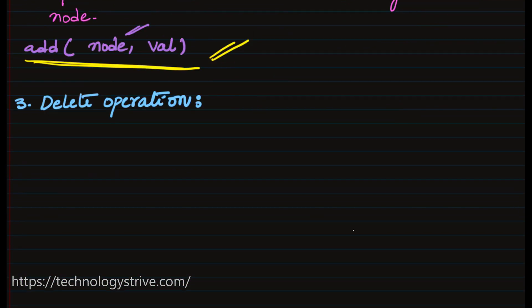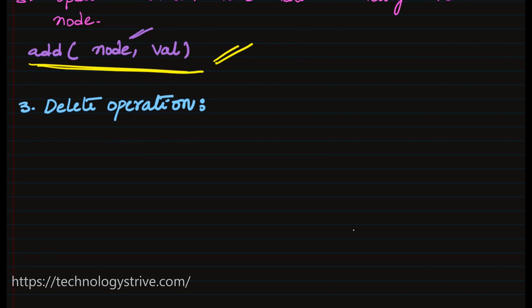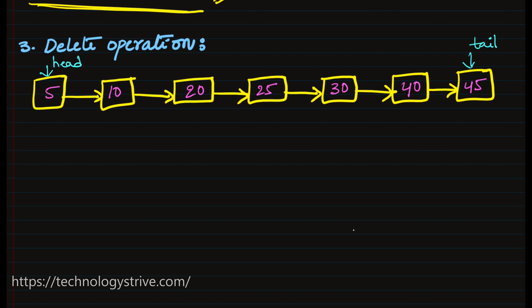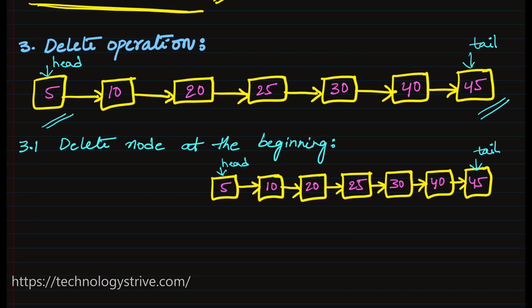Now let's talk about the delete operation. Delete can also happen in three ways: we may want to delete the first node, the last node, or a node at some random position. First let's see how to delete a node at the beginning. To delete the first node, which is the head of the linked list, head has to move to the next node. So first update head to head.next.